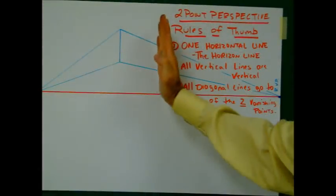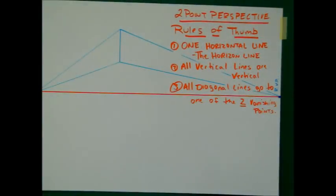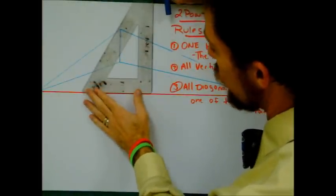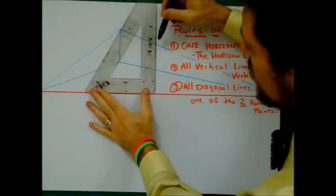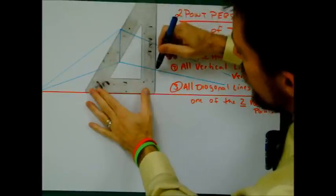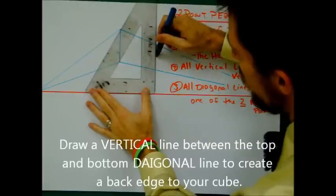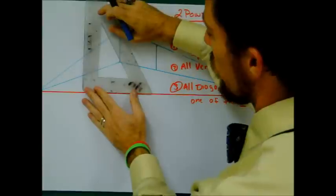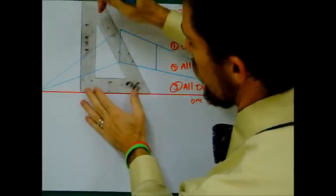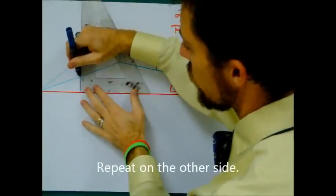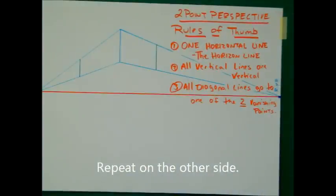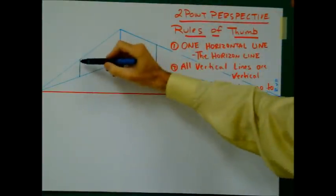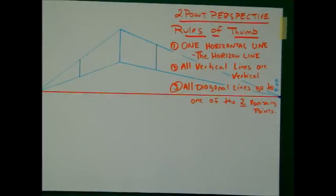Now the next thing we have to do is we have to create the back edges of this cube, because we can't have an infinite box. So I have to have a box that has an end to it. What I'm going to do is draw a vertical line somewhere to end this edge of the box — between the top diagonal and the bottom diagonal, I'm going to draw in a vertical line, and I'll do the same thing on the other side. So now I've got the back edge of one side of the box and the back edge of the other side.